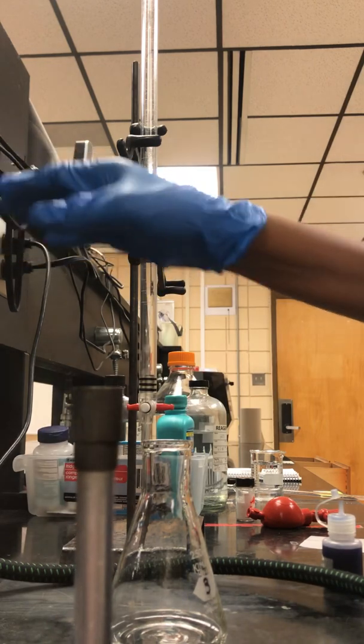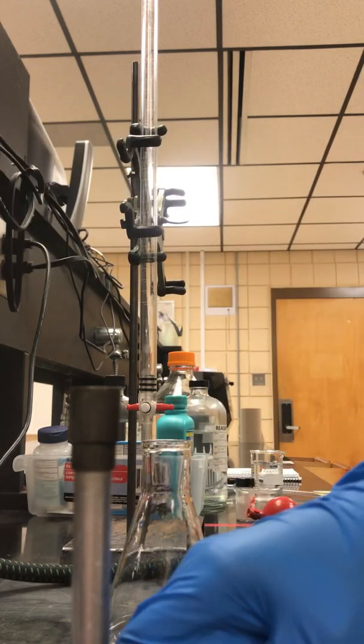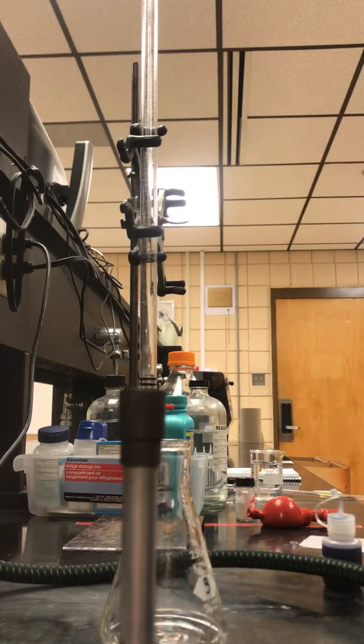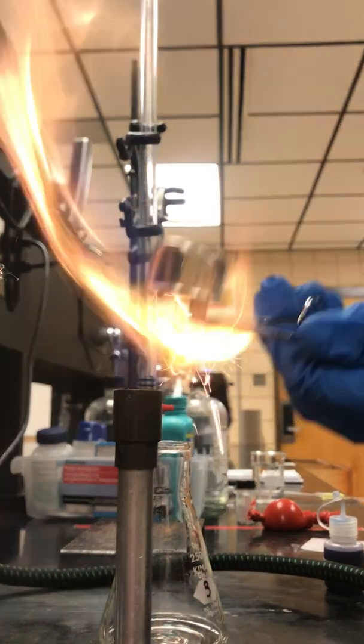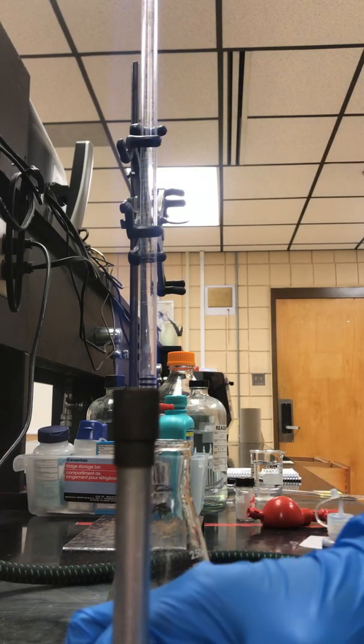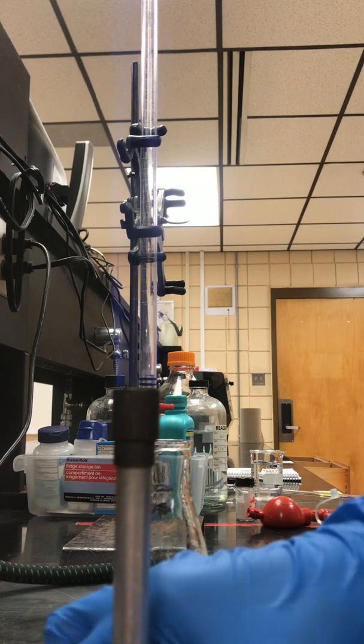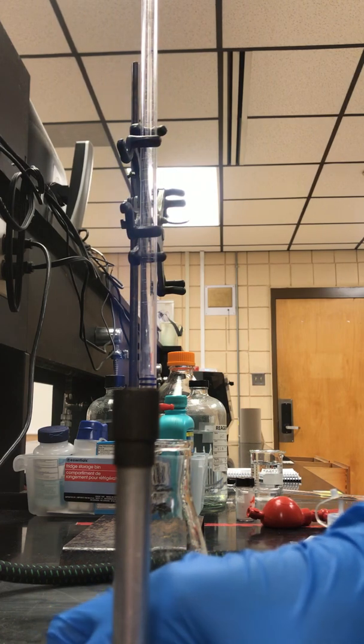We're going to light the Bunsen burner. Turn the gas knob down, you're going to smell gas. Take your striker, you should only have to strike once. Adjust your flame by turning the knob on the bottom.